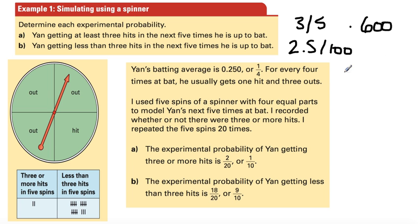1.25 hits every five at bats. So if you look at the numbers here, he's hoping he's going to go three for five. On average, he goes 1.25 for five, or one if you round down, one out of every five.